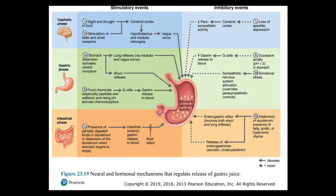Figure 23.19 summarizes both neural and hormonal mechanisms regulating gastric juice release, subdivided into the cephalic, gastric, and intestinal phases. In the cephalic phase, sight, thought of food, and stimulation of taste and smell receptors send sensory information to the cerebral cortex, then to the hypothalamus and medulla oblongata, and the vagus nerve stimulates the stomach. In the gastric phase, stomach distension activates stretch receptors, generating long reflexes via the medulla and vagus nerve, plus short reflexes. Food chemicals, especially peptides and caffeine, activate chemoreceptors which activate G cells to release gastrin into the blood.